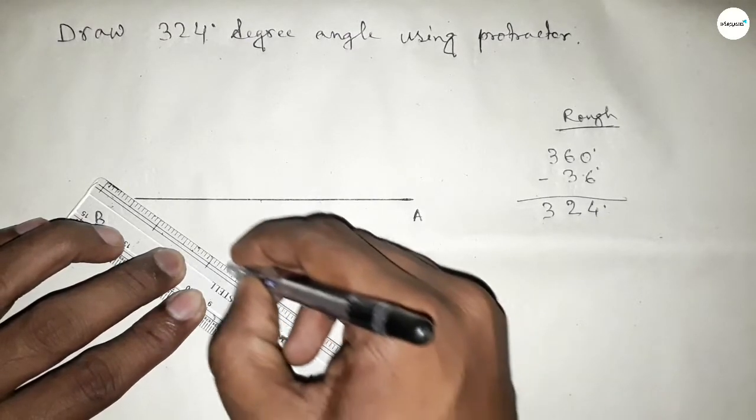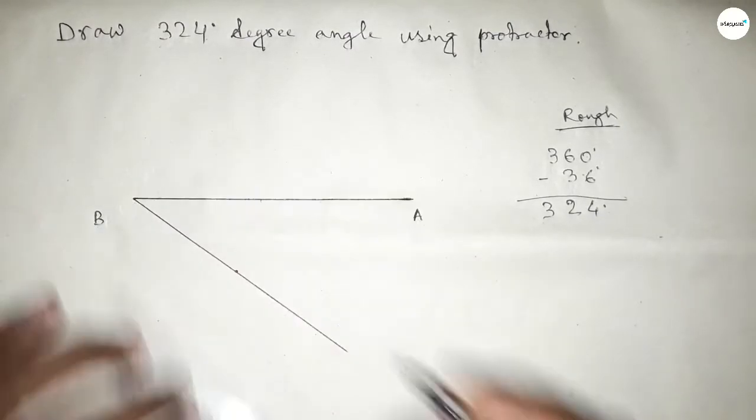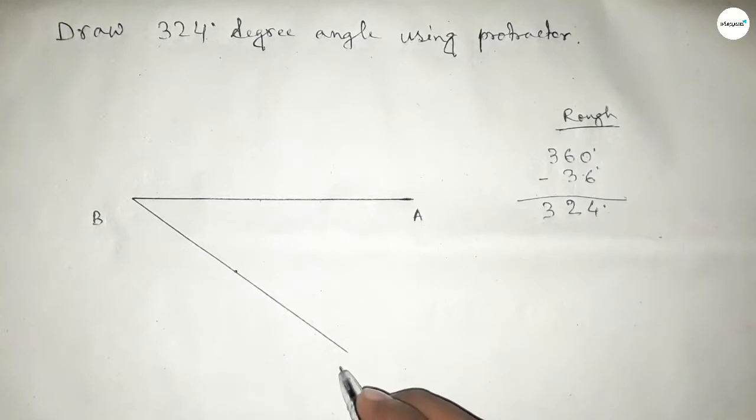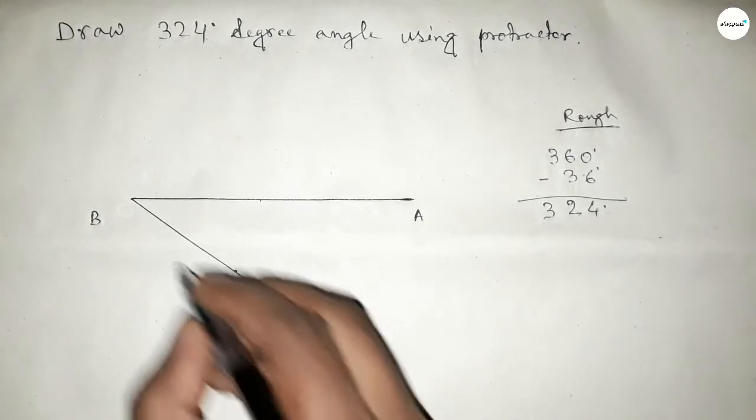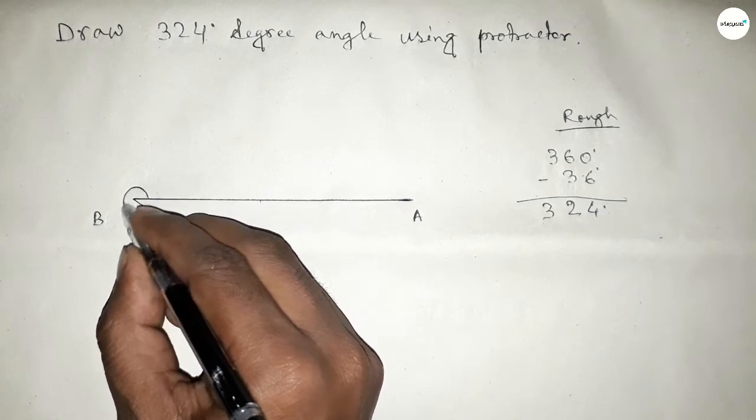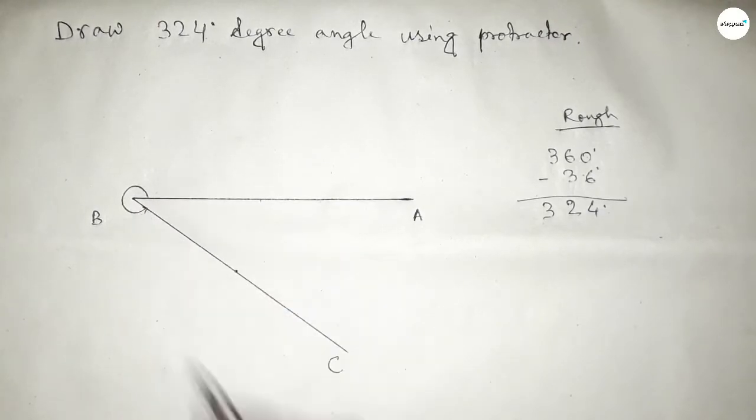Now joining this, taking point C here. So angle ABC up to this is 324 degrees.